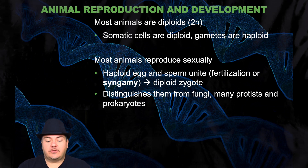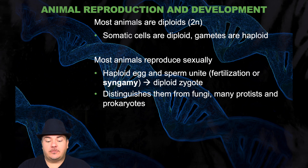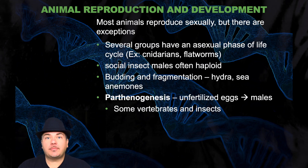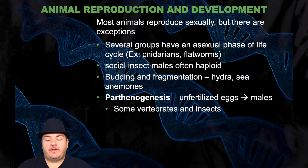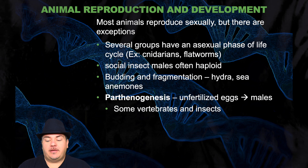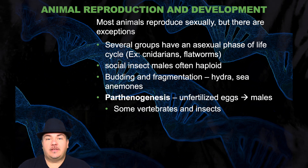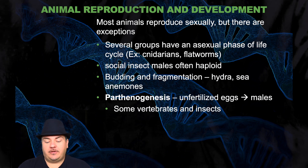Most animals reproduce sexually, so the haploid egg and haploid sperm unite through fertilization to produce the diploid zygote. This distinguishes them from fungi, many protists, and prokaryotes. Most animals reproduce sexually, but there are some exceptions. Several groups have an asexual phase of life cycle — for example, cnidarians, flatworms, social insect males are often haploid, budding and fragmentation in hydra or sea anemones, and parthenogenesis, which is unfertilized eggs developing into males. You find this in some vertebrates and insects.